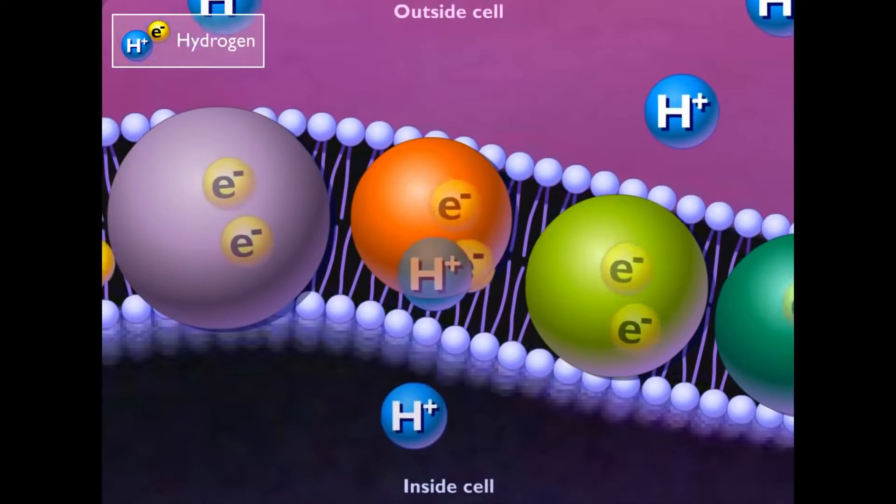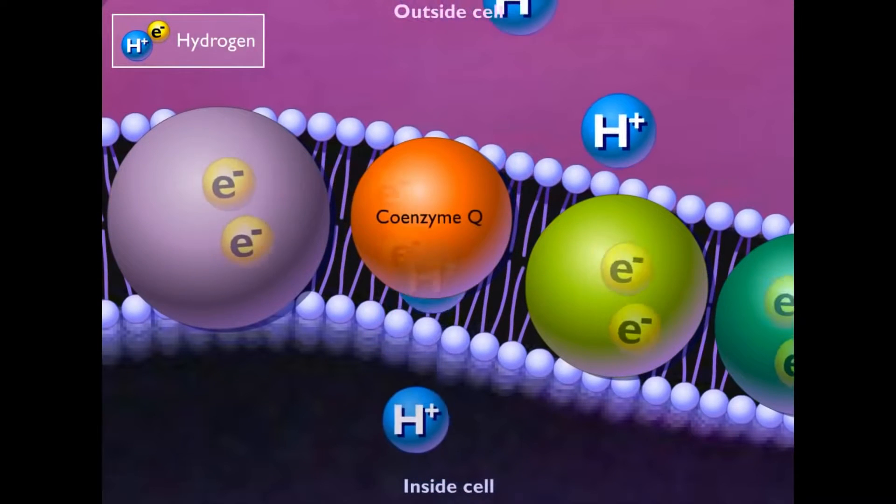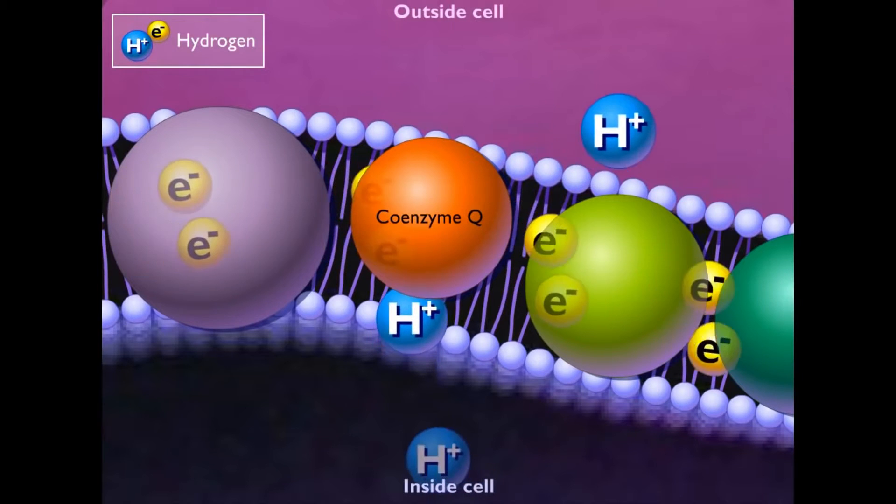Some of the electron carriers, such as coenzyme Q, accept a proton from the inside of the cell membrane as it accepts electrons.